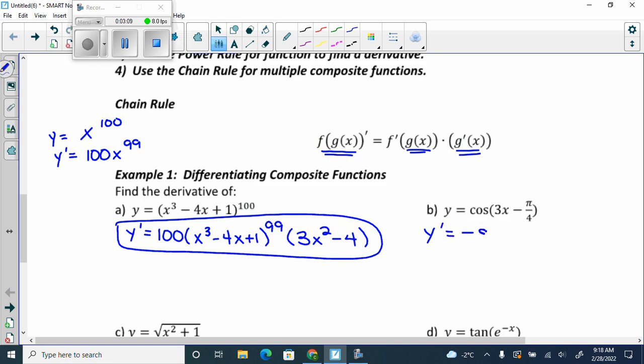Negative sine. So we're going to get negative sine x. What's x? 3x. 3x minus pi over 4. We agree?